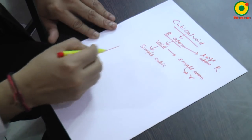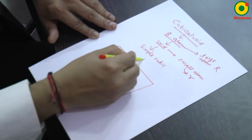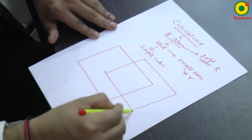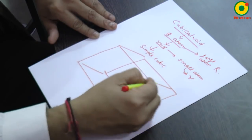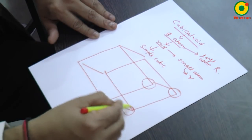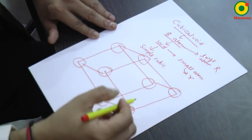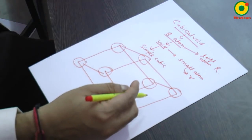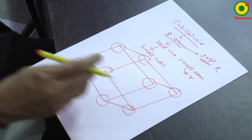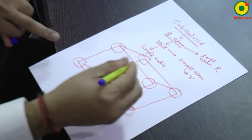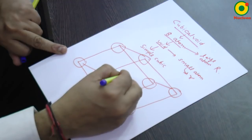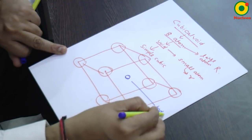Simple cubic structure we already have drawn that eight atoms are present at each corner. Four, five, six, seven, eight. In these eight atoms, one atom is present exactly at the body center. This is the body center.